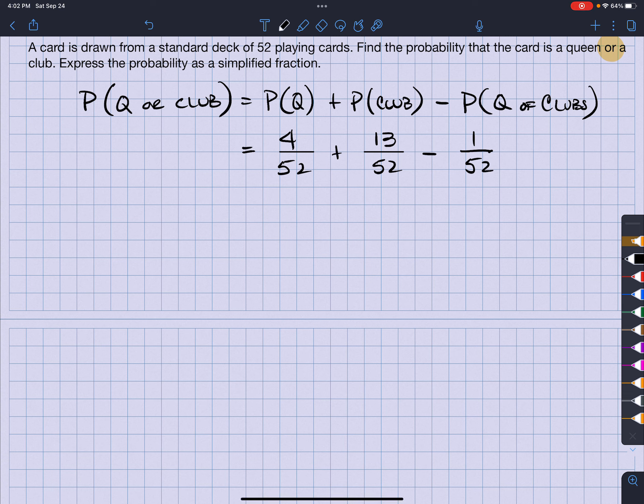So let's take a look. 4 plus 13 plus 1 - I'm sorry, minus 1 - it's going to be minus 1 over 52. So I'm going to get 4 over 13.